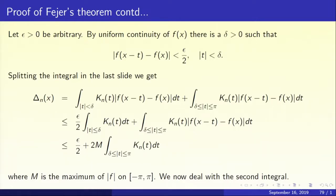Now turn to the second piece. In the second piece we have k_n(t) times mod of f(x minus t) minus f(x). Now f is uniformly continuous so it is bounded — it is 2pi periodic and uniformly continuous, so it is bounded by say M. Therefore mod of f(x minus t) minus f(x) is less than or equal to 2M. So the second integral is less than or equal to 2M times the integral of k_n(t) dt over delta less than or equal to mod t less than or equal to pi.